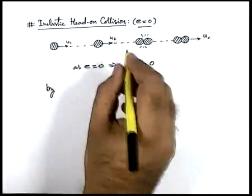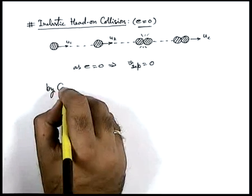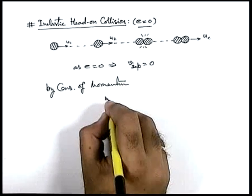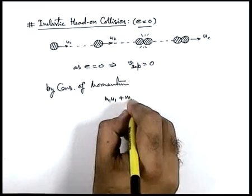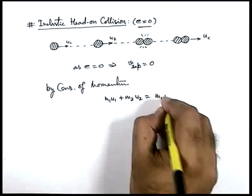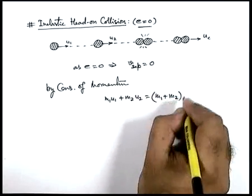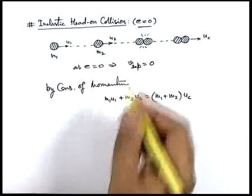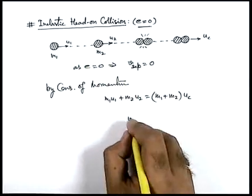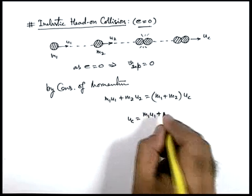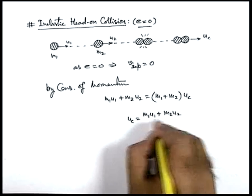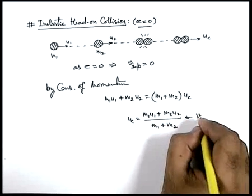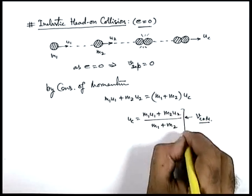As no external force is present, by conservation of momentum we can write m-one u-one plus m-two u-two equals (m-one plus m-two) into u-c, because both are moving with a common velocity. So u-c can be written as (m-one u-one plus m-two u-two) upon (m-one plus m-two).